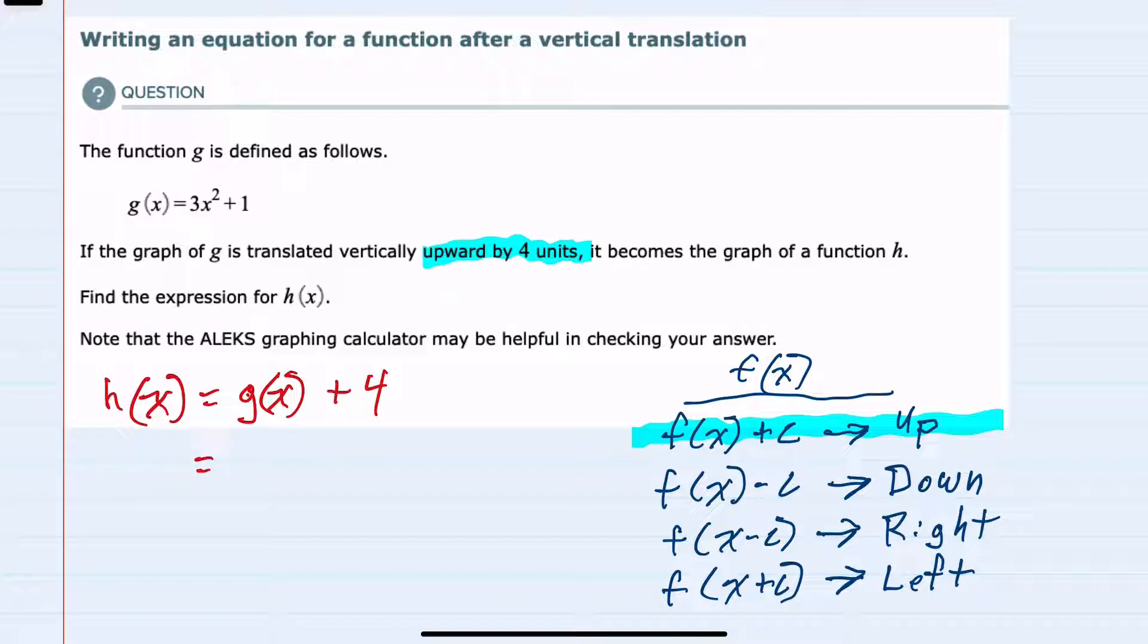Since g(x) is 3x² plus 1, we add 4 to that function, giving us 3x². We can combine like terms to get plus 5.